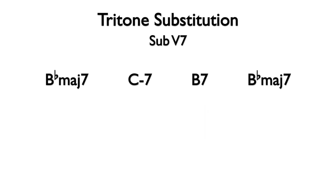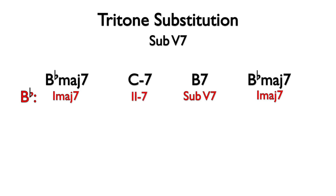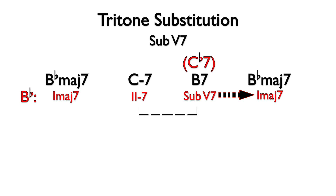Since this progression is in the key of Bb, the Bb major 7 chords are 1 major 7 and the B7 is sub-5. The Cm7 is 2m7. We can finish the analysis with a broken arrow for the resolution of the tritone substitution and a broken bracket for the related two. It is important to note that the B7 could have been written as Cb7. In jazz compositions, enharmonic spellings are common for chords, but composers tend to choose the chord name that will be recognized the fastest. Since Cb is a relatively uncommon note, we would more likely see a B7 chord symbol.